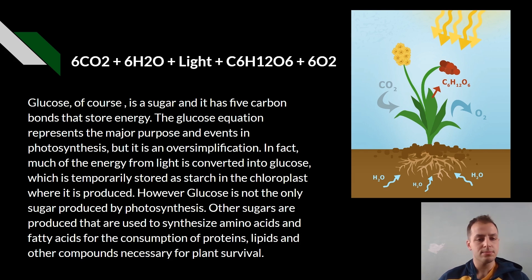This glucose equation represents the major purpose and events in photosynthesis, but this is an oversimplification. In fact, much of the energy from the light is converted into glucose, which is temporarily stored as starch in the chloroplast where it is produced.